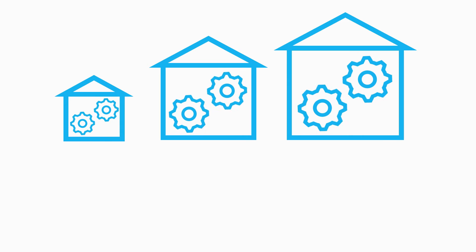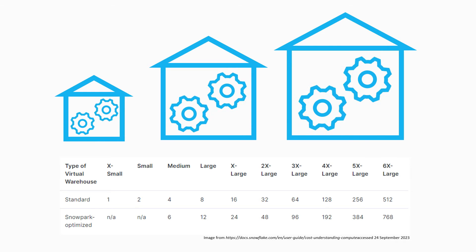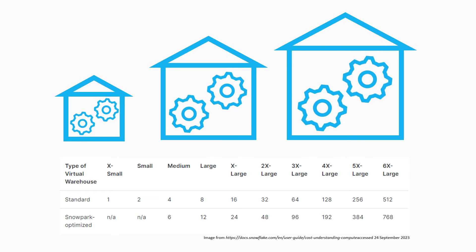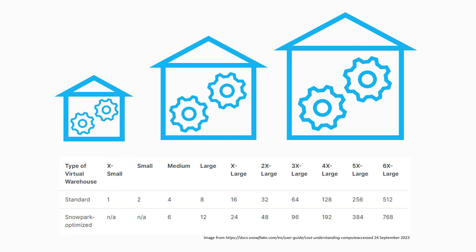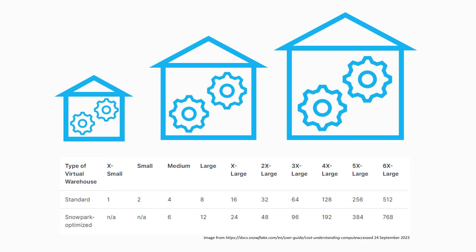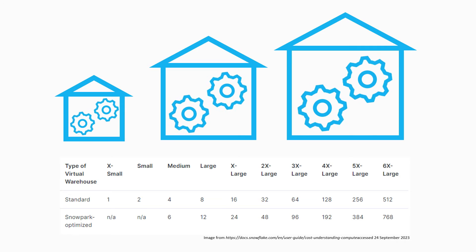Warehouses come in a range of sizes. Larger warehouses will be faster at running queries but will charge more credits per hour of runtime. Credit costs range from one credit per hour for an extra small warehouse to 512 credits per hour for a 6XL. Snowpark optimised warehouses are also available for workloads that need a lot of memory, like training machine learning models.